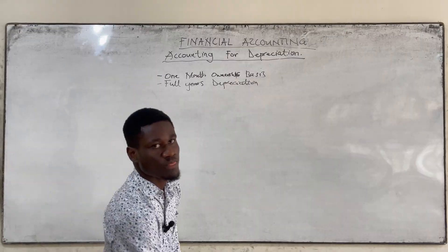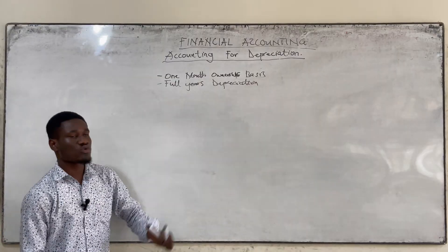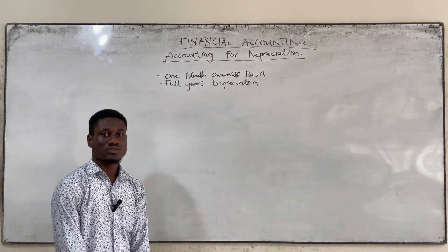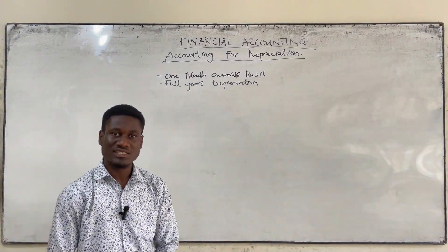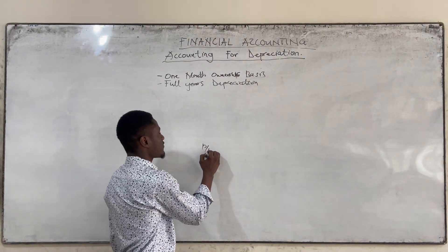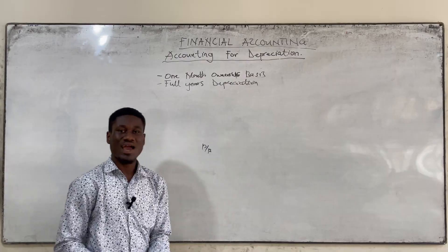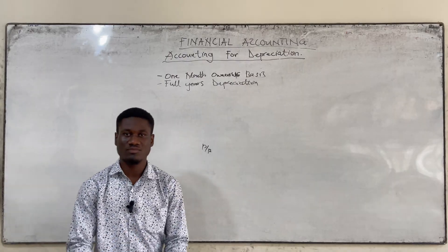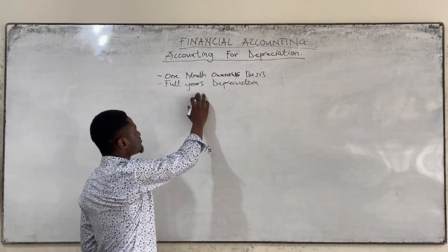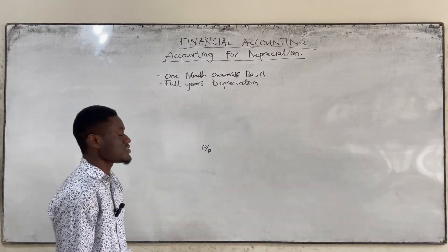For a full year's depreciation, you don't have to consider the number of months the asset has been in use. If it was bought in November, you are going to charge a full year's depreciation — that's 12 over 12, which equals one. So any number times one is that same number. For a full year's depreciation, the number of months the asset has been in use is not considered.